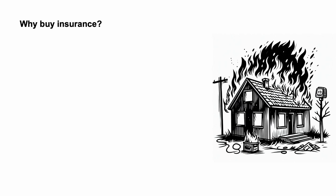Insurance has a negative expected value due to the insurer's profit and administrative costs. Why would a consumer purchase insurance? The classical economic explanation for the purchase of insurance is based on diminishing marginal utility, which leads to risk aversion. Consumers are willing to buy insurance as the consumer prefers the certainty of the premium payment to the risk of suffering an uninsured loss.